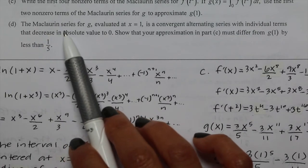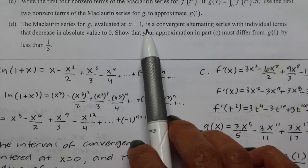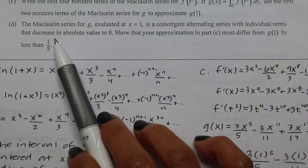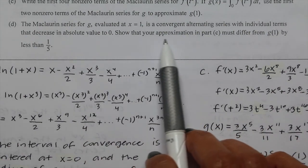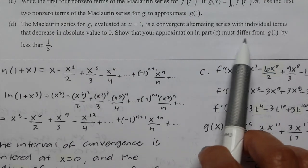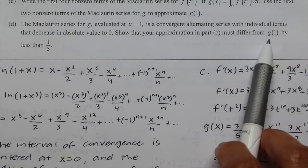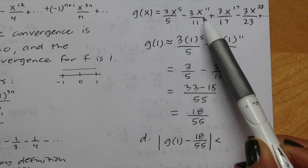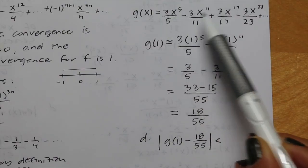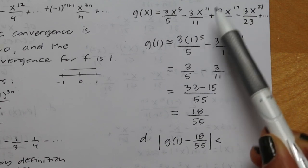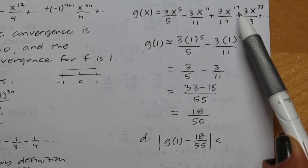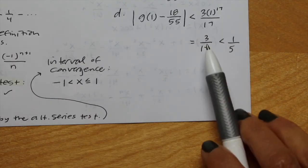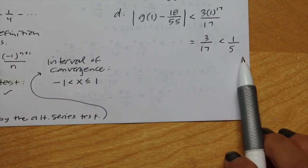Part d states the McLaurin series for g evaluated at 1 is a convergent alternating series with terms that decrease in absolute value to 0. We must show our approximation from part c differs from the actual value of g of 1 by less than one fifth. Since we only used 2 terms, we look at the next term for error. The next term is 3x to the 17th over 17; plugging in x equals 1 gives 3 over 17, and 3 over 17 is less than 1 fifth.